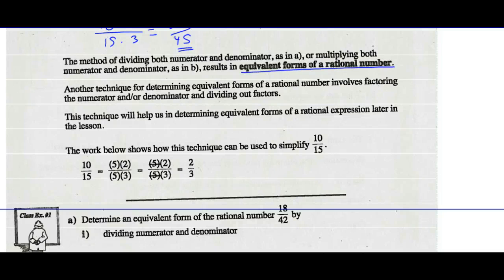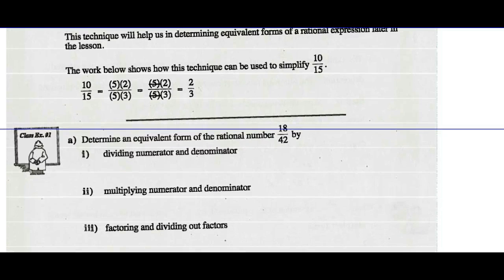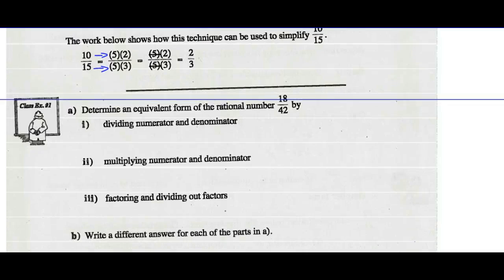Another technique for determining equivalent forms of a rational number involves factoring the numerator and/or denominator and dividing out the factors. Remembering we did factoring the last unit — this technique will help us determine equivalent forms of a rational expression later in this lesson. The work below shows how this technique could be used to simplify 10/15: 10 is the same as 5 times 2, 15 is the same as 5 times 3. You can reduce the 5s and you're left with 2/3.